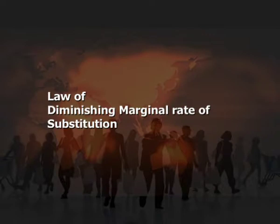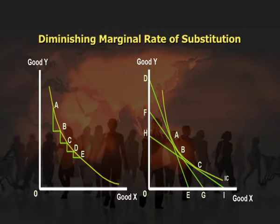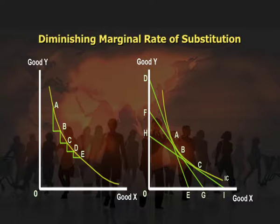Moving ahead to the law of diminishing marginal rate of substitution. An important principle is that the marginal rate of substitution of X for Y, that is MRS xy, decreases as more and more of good X is substituted for good Y. In other words, as the consumer gets more of good X, he is prepared to forego less and less of good Y. As illustrated in the diagram, when a consumer moves down from combination A to B, he gives up delta Y of good Y for a compensating gain of delta X of good X. Thus, the MRS xy in this case is delta Y1 divided by delta X.